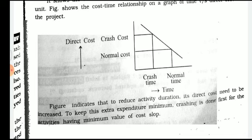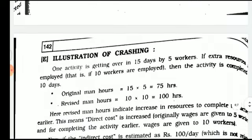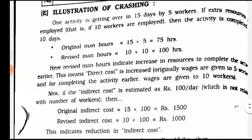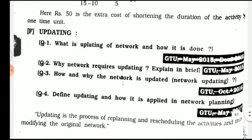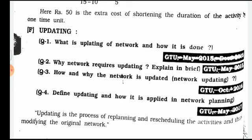To keep extra expenditures minimum, crashing is done first for the activity having the minimum value of cost slope. Now, what is updating? This question is asked in many ways in GQ: what is updating of network and how is it done? Why is a network diagram required to be updated? How and why is the network updated?